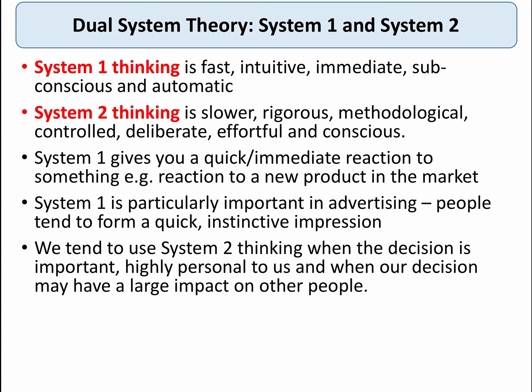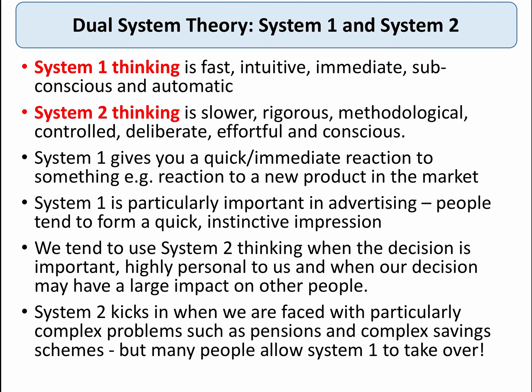We tend to use system two when we have an important decision to make, or when the decision is highly personal to us, or when a decision has a big impact on other people — suggesting a more deliberative, conscious, considered view is needed. We may face a complex problem: which pension fund to choose, which saving scheme to enter into, which form of car insurance. System two tends to kick in when faced with complex issues.